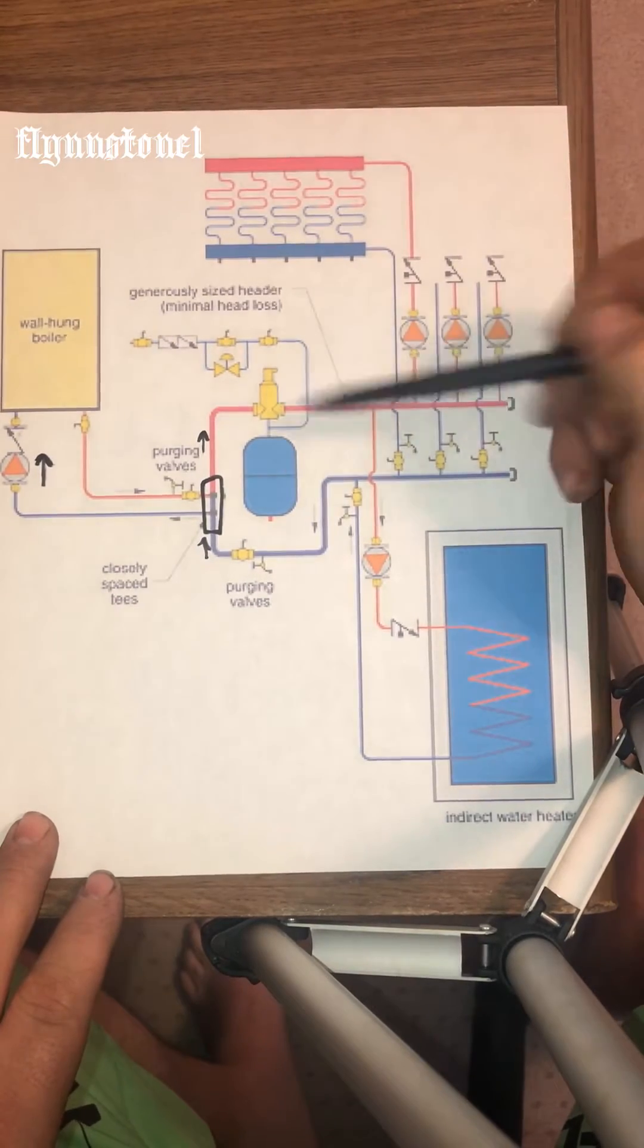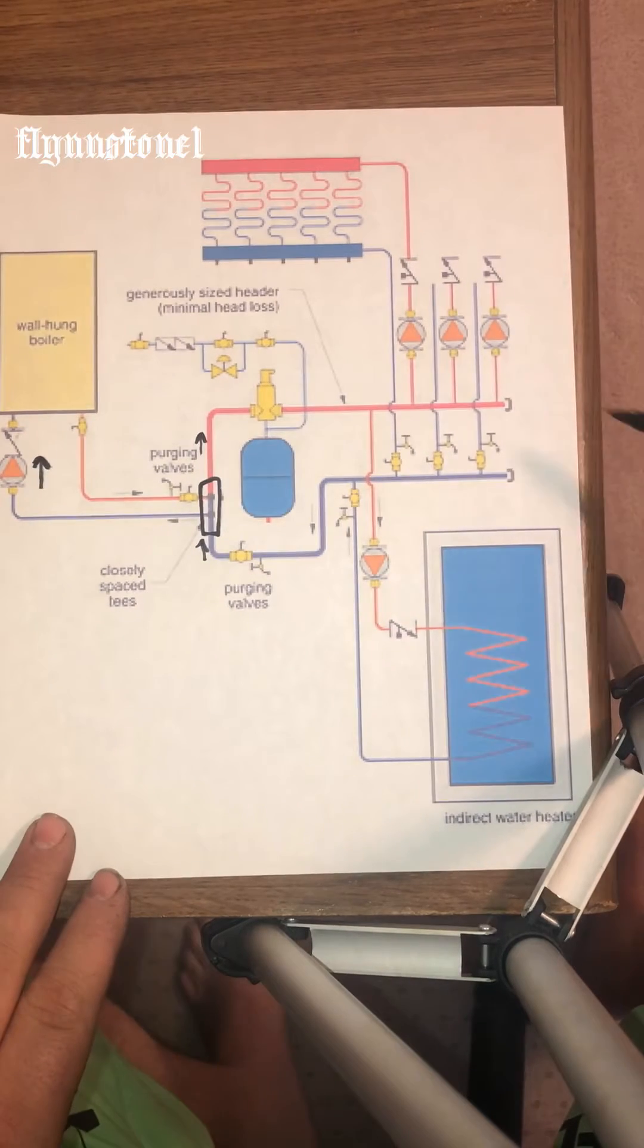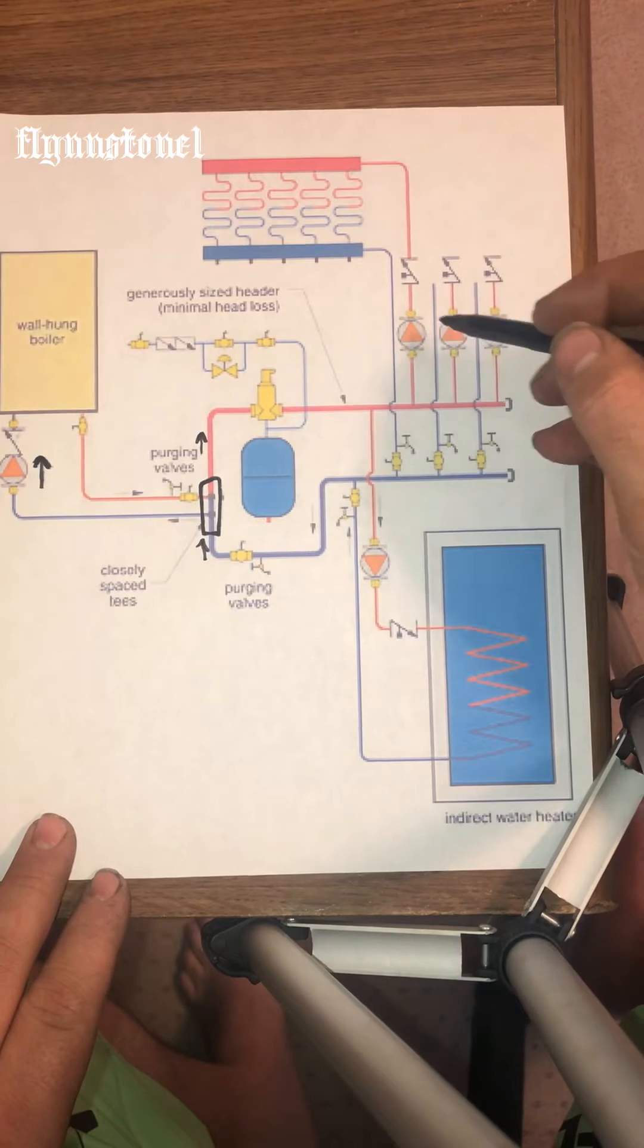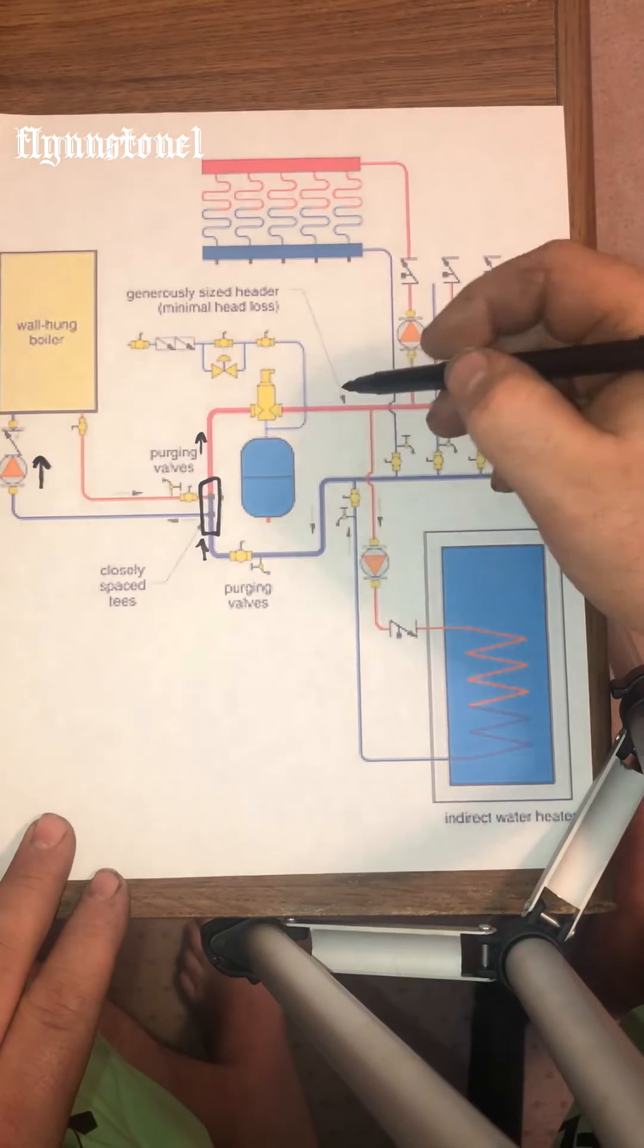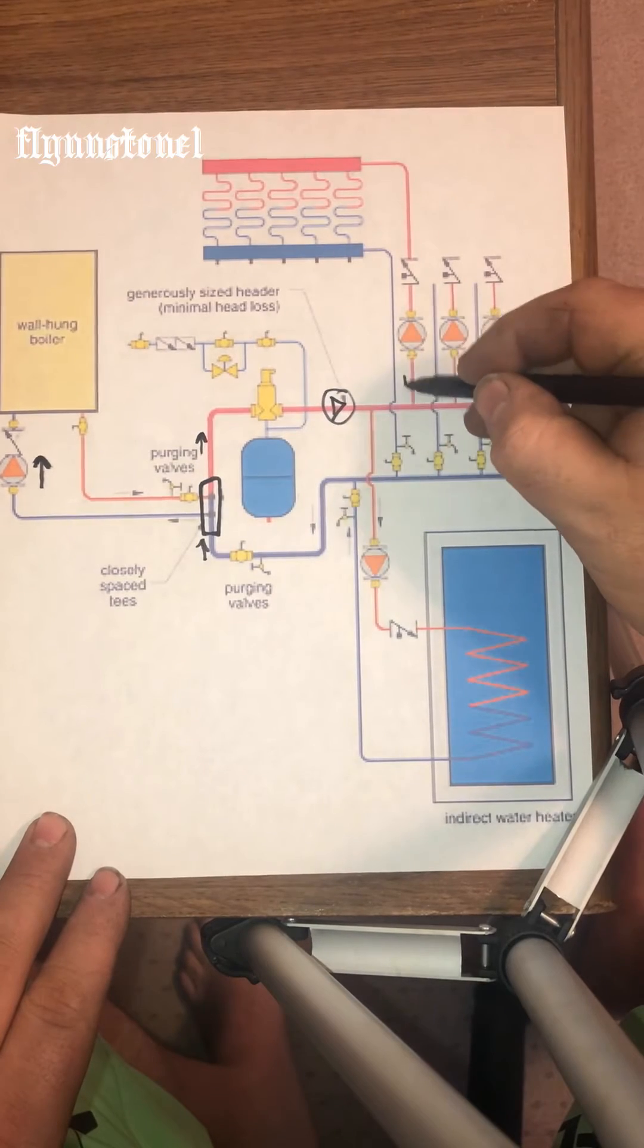Next air eliminator, expansion tank, feed. Then you would have instead of doing circulators, you can do one circulator and zone valves.